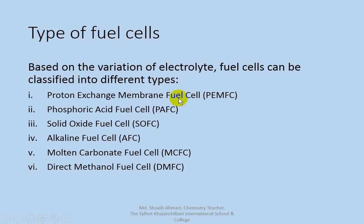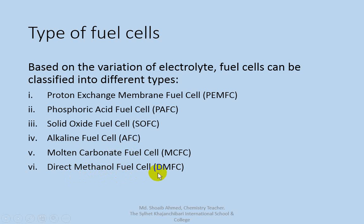The types of fuel cells are: Proton Exchange Membrane Fuel Cell (PEMFC), Phosphoric Acid Fuel Cell (PAFC) — where phosphoric acid is the electrolyte, Solid Oxide Fuel Cell (SOFC), Alkaline Fuel Cell (AFC) — where potassium hydroxide is used as electrolyte, and Molten Carbonate Fuel Cell (MCFC) — where molten sodium carbonate is used as electrolyte. There is also the Direct Methanol Fuel Cell (DMFC).